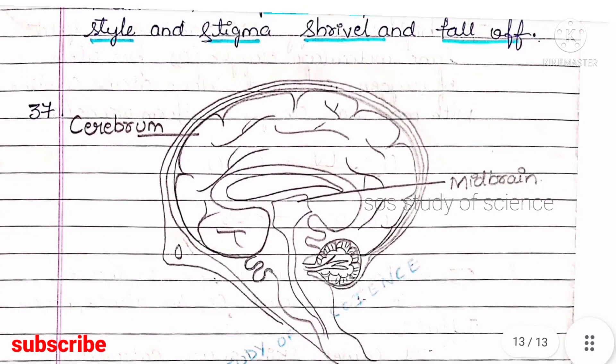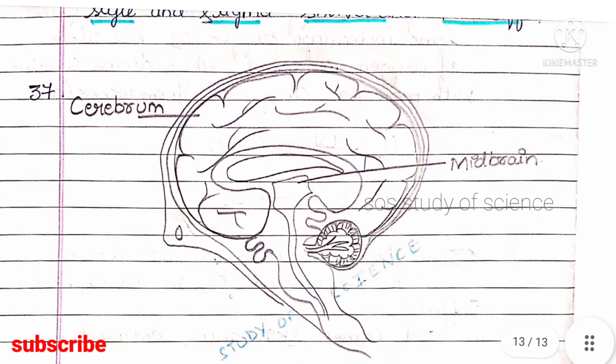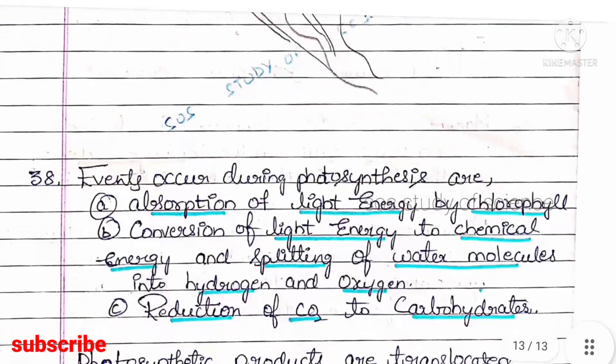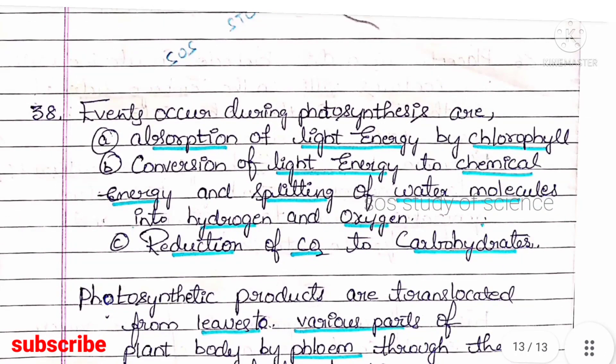Question 37 asks you to draw the human brain and label the cerebrum and midbrain. Draw the diagram and label these two parts to get four marks.